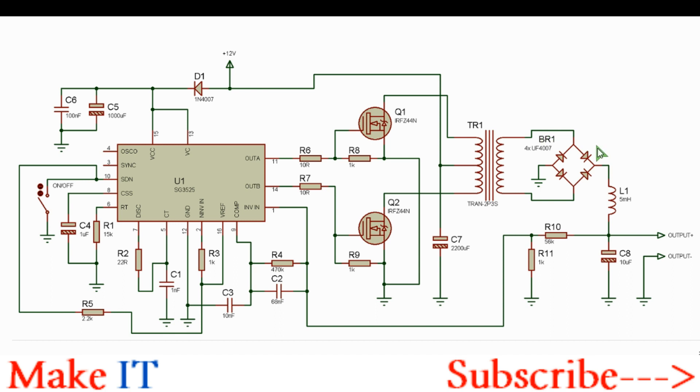At the output you have this rectifier made by these high frequency diodes UF4007. Here you have your positive. This output choke limits the initial charging current for these output bulk capacitors, which can be much higher and damage your diodes. This is the output filtering capacitor.